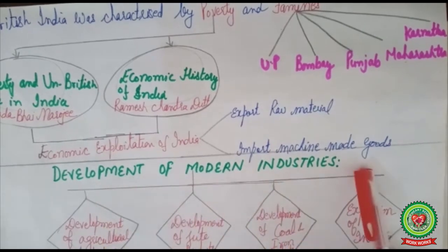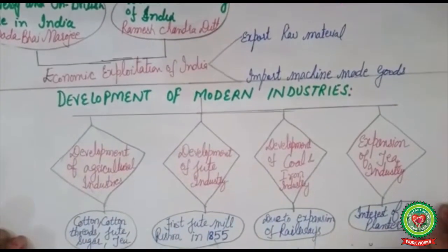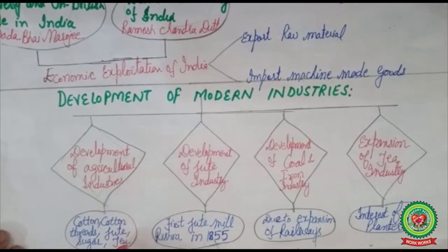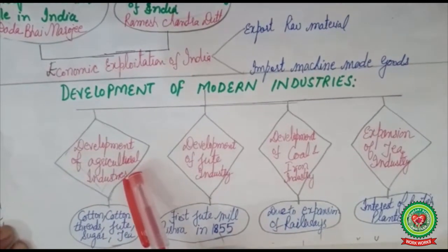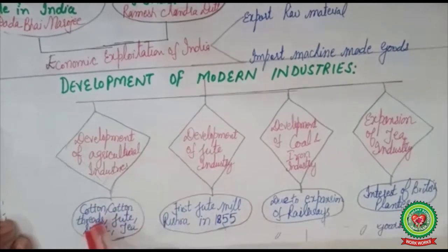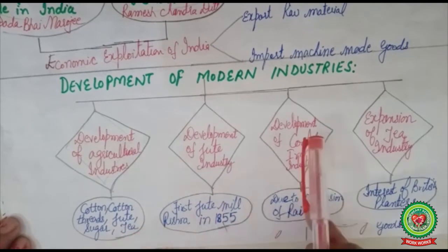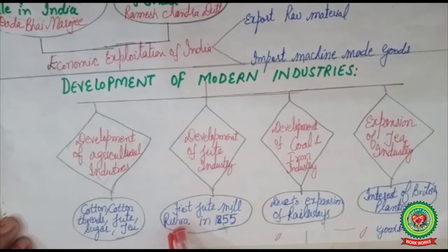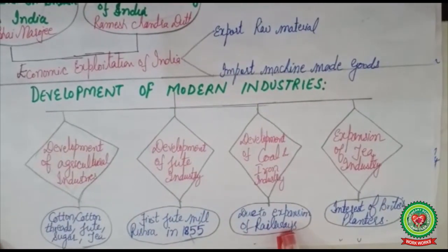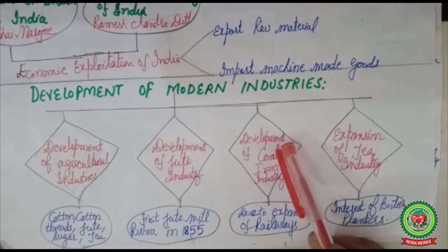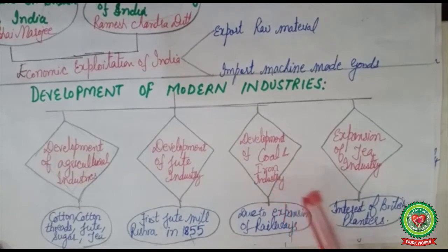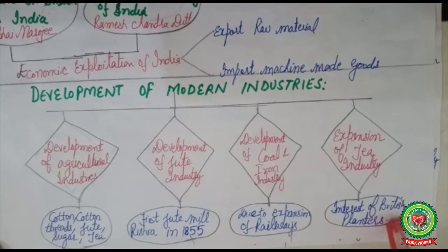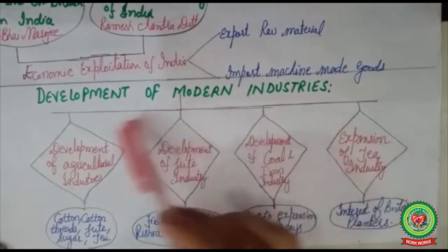So industrialization also started in India. Firstly, they developed the agricultural industries because these were the raw materials required in the textile industries in England — cotton threads, jute, sugar, and tea. After that, they developed the jute industry. The first jute mill was established in Rishra, a place near Calcutta, in 1855. Then, due to expansion of railways, the demand for coal and iron increased. There was also expansion of the tea industry due to the interest of British planters in Assam and other hilly areas.